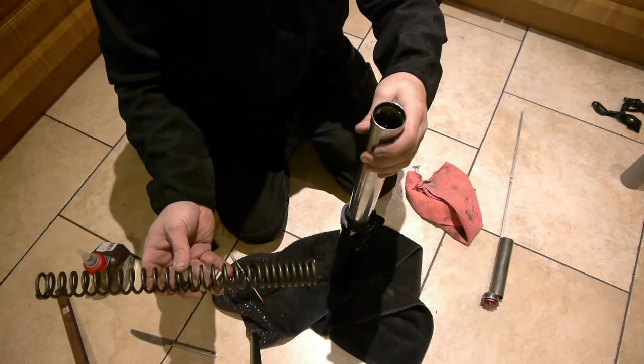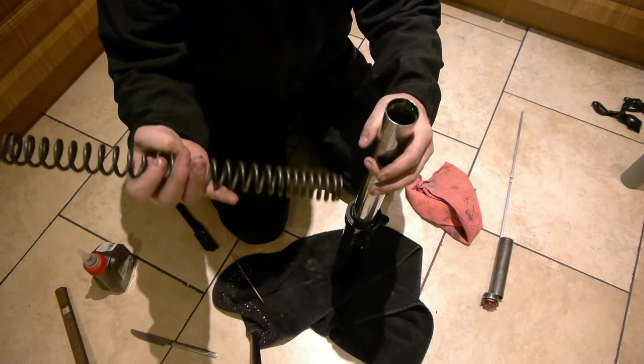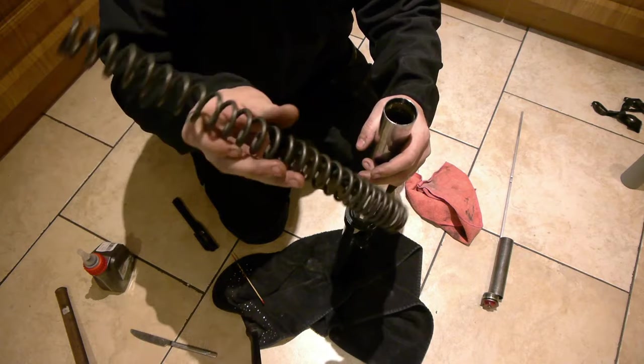Remember just from disassembly which way around it goes. Generally the tighter wound coils will be at the bottom. Just make sure it's completely clean once again.